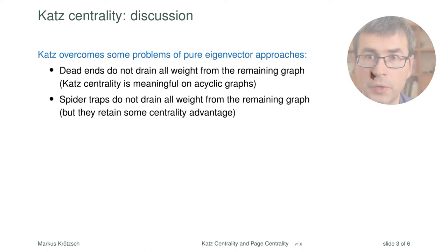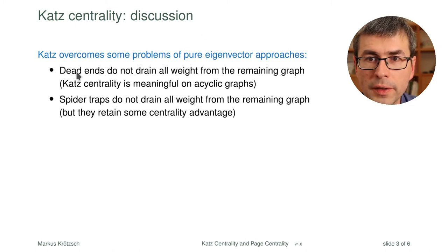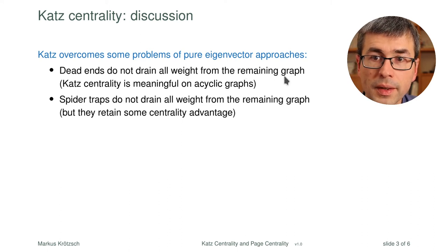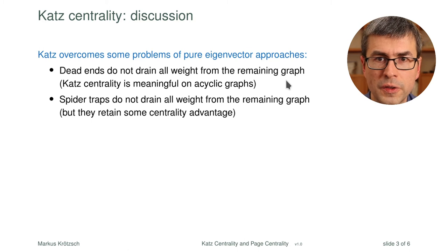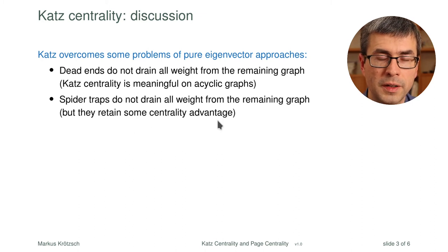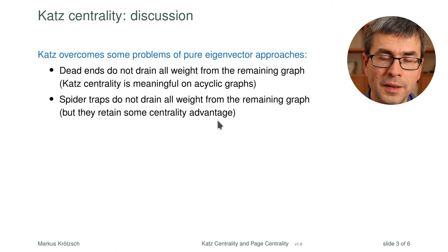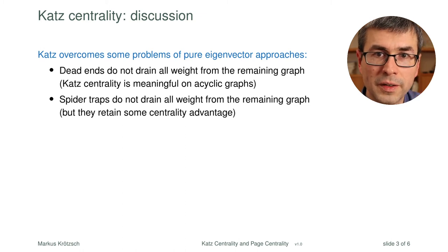What Katz centrality achieves: it overcomes the problems of pure eigenvector approaches. Dead ends do not drain all weight from the remaining graph. Katz centrality is even meaningful for acyclic graphs — for example tree-shaped graphs — where you'd still get values that make sense. Spider traps do not drain all weight from the remaining graph either, but they still have a certain centrality advantage: a spider trap will have a larger number of paths leading to each element inside the cycle than a node outside feeding towards it.